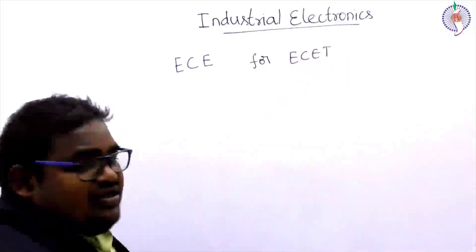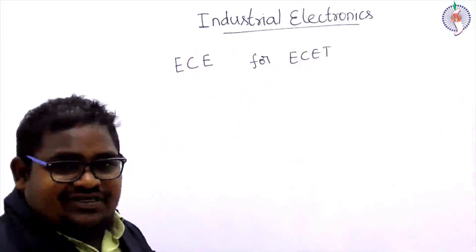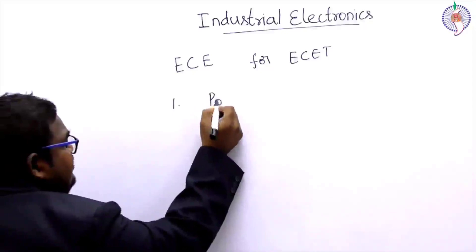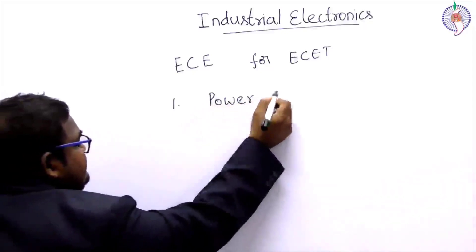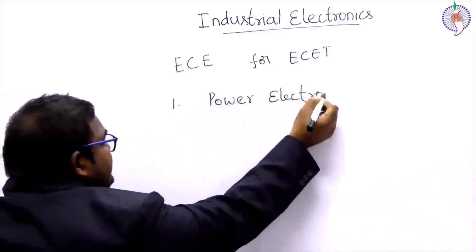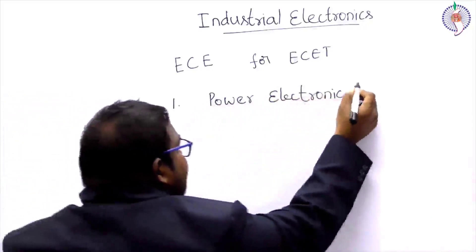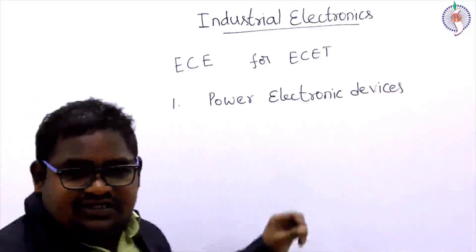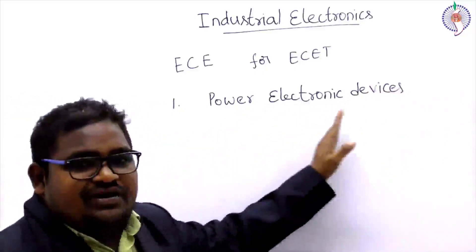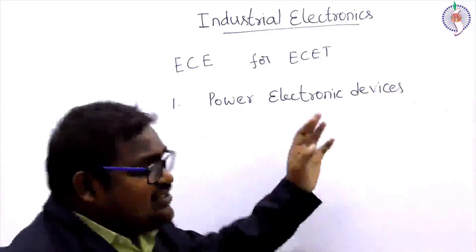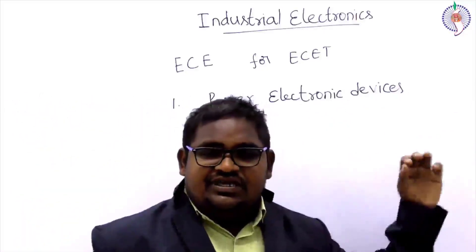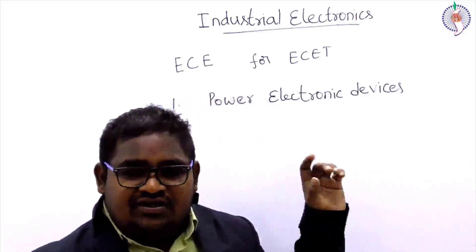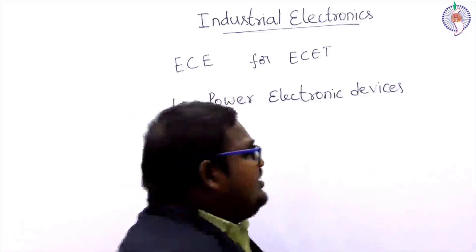Now, what are the contents present in Industrial Electronics? The first part is Power Electronic Devices. In this area, we discuss what is SCR, what are the different characteristics of SCR, and what are the operating modes of SCR.